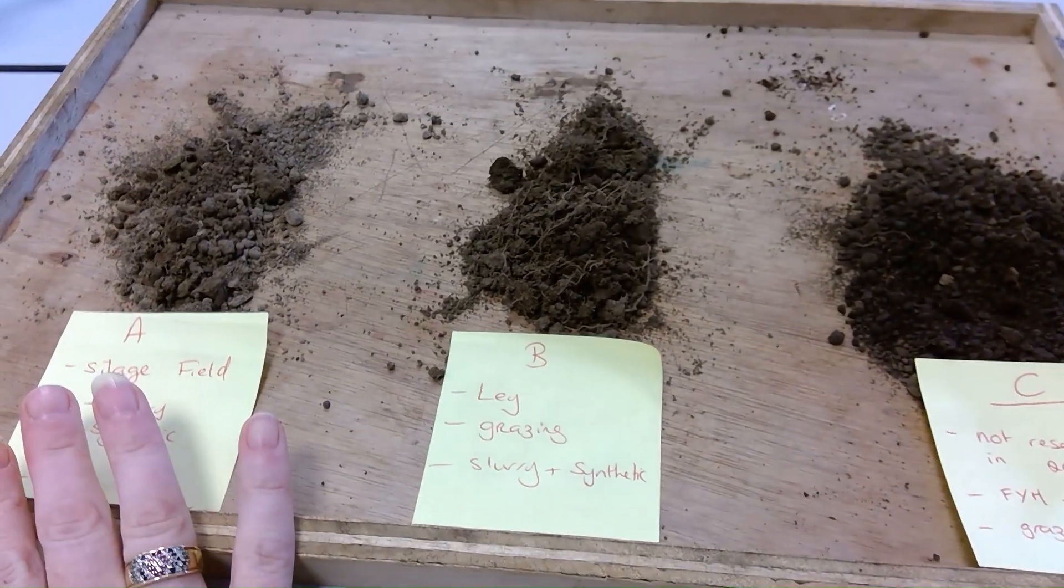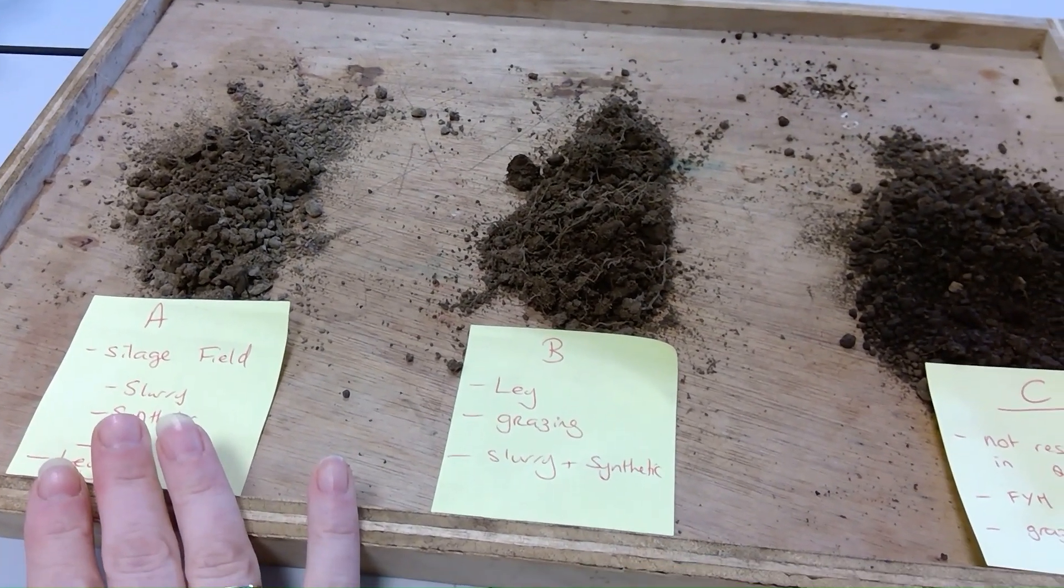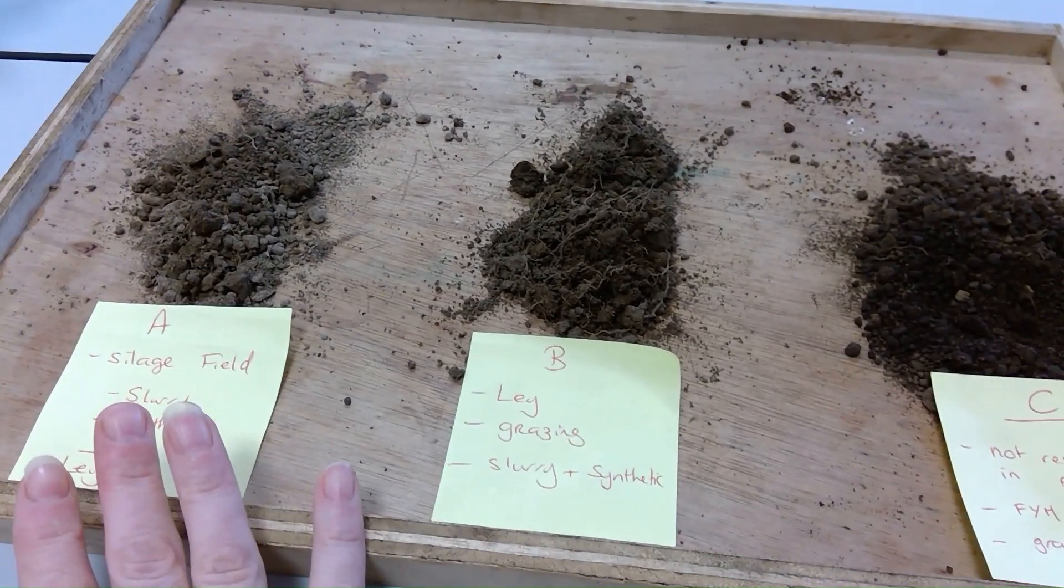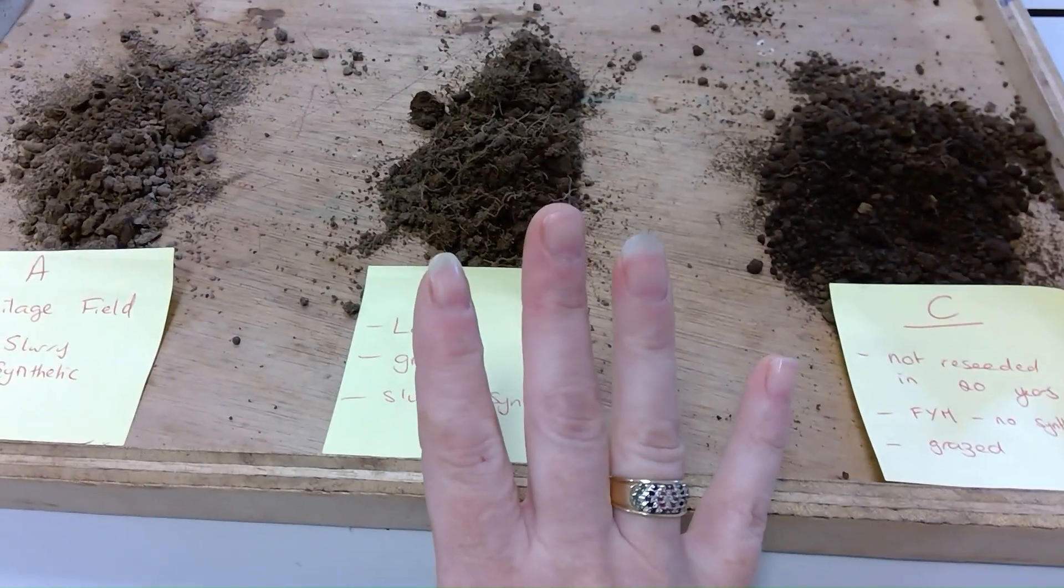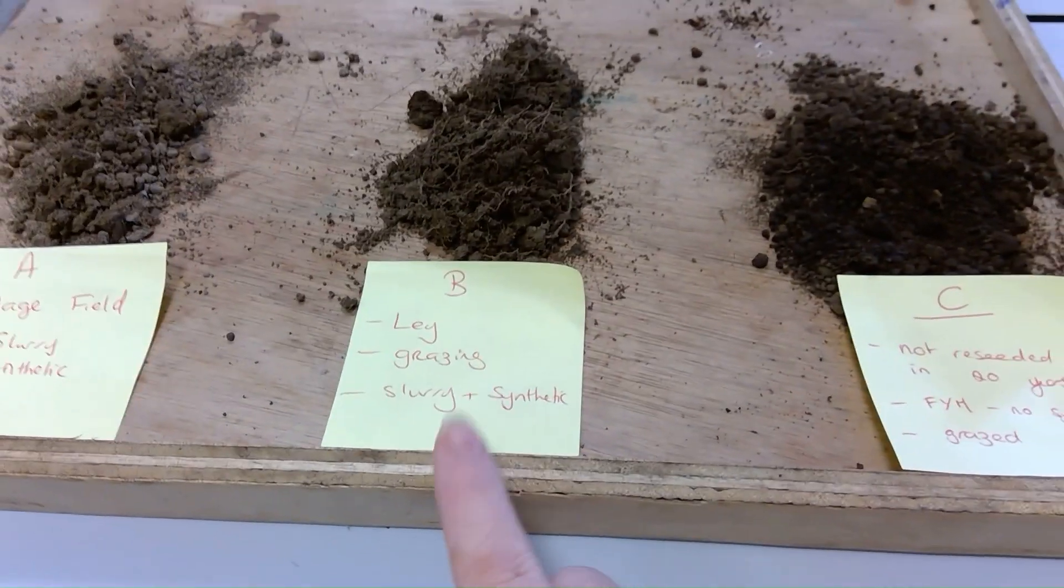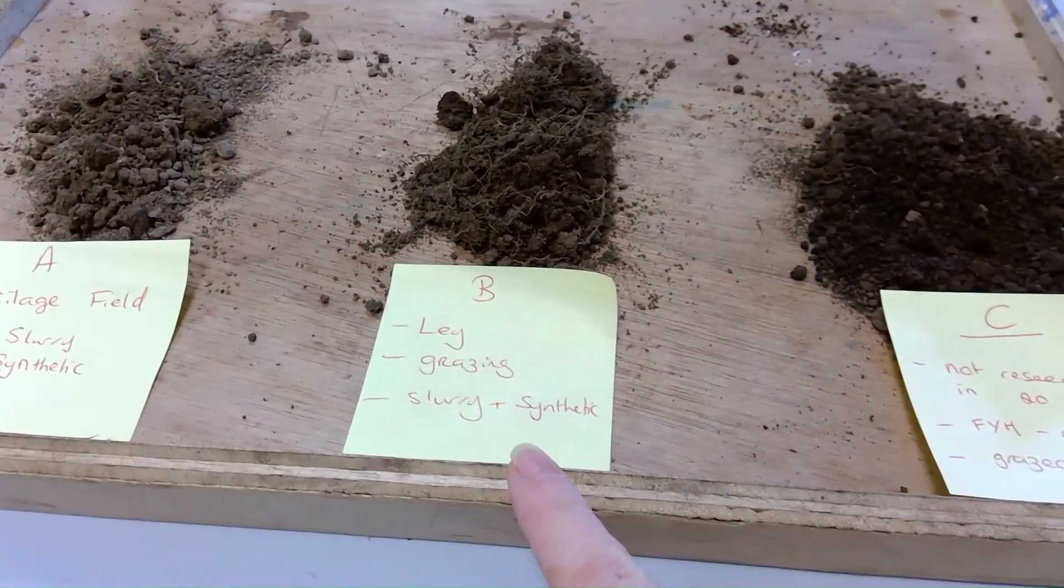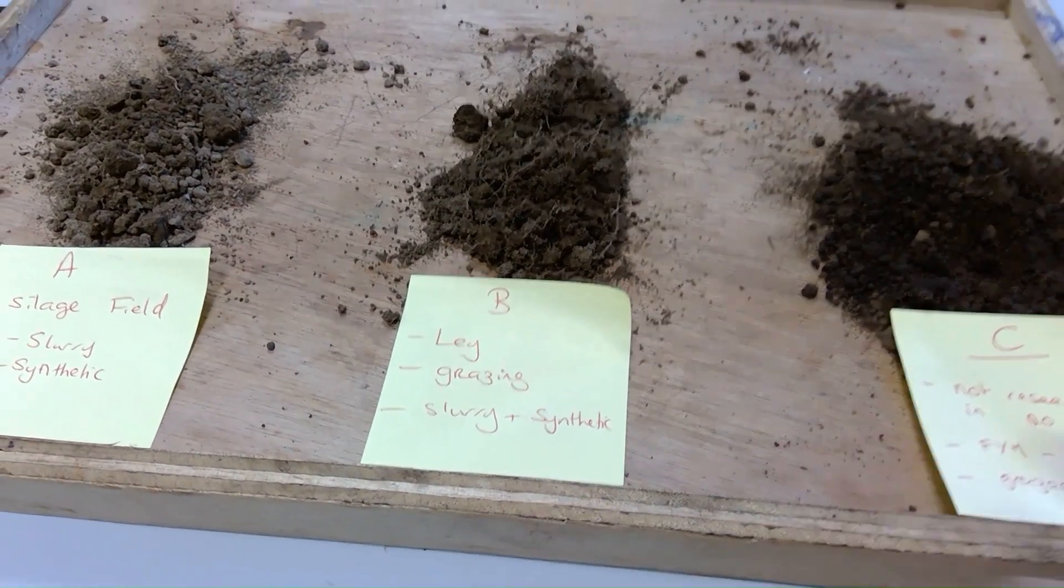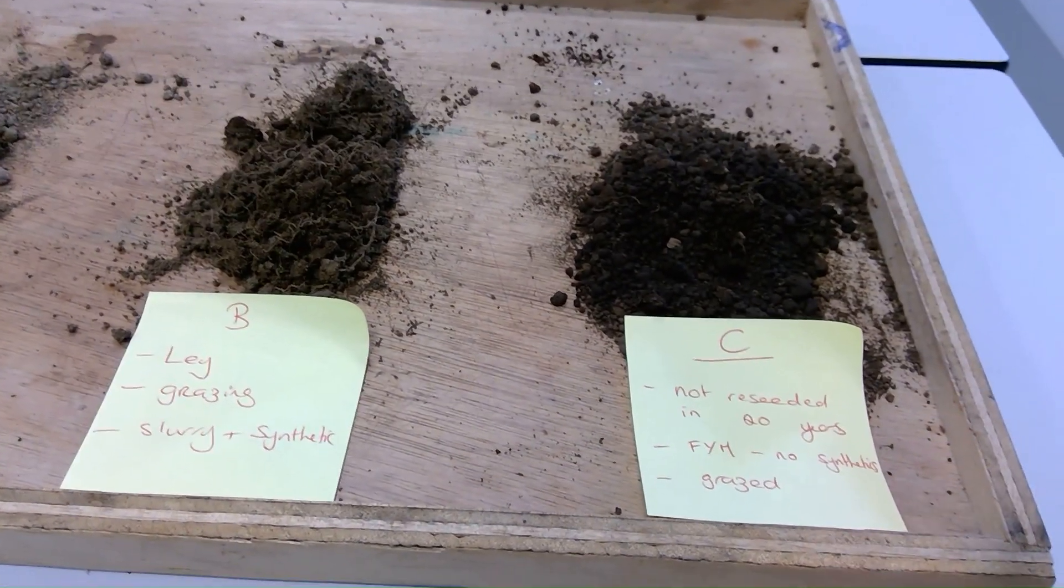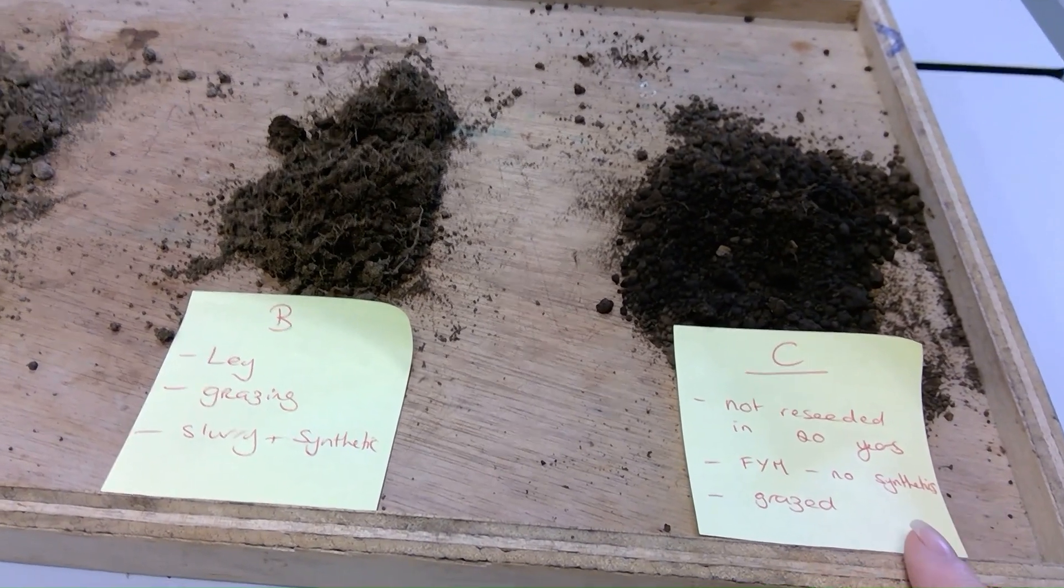So this one here is from a silage field. It only gets synthetic fertilizers and slurry, it's not grazed at all, there's no solid manure going on that ground. And this one here is a lay, it has been recently reseeded in the last four or five years, again synthetic fertilizers and slurry, no farm yard manure.